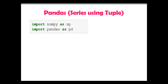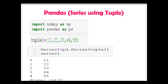Next, pandas series using a tuple. Again I have imported numpy as np and pandas as pd. I have created a tuple with 5 values: 11, 22, 33, 44 and 55. Passing this tuple1 to the Series method of pandas, the pandas series is created and indexes are automatically created by pandas.